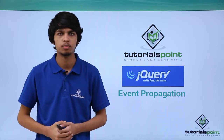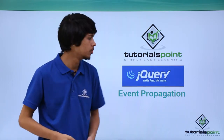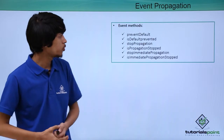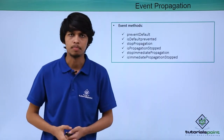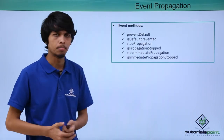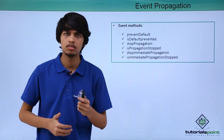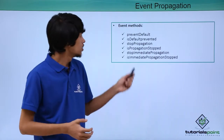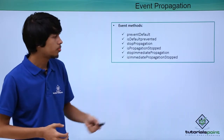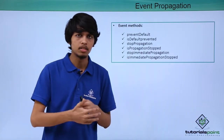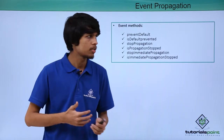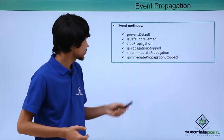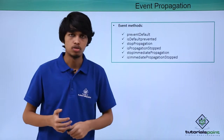Hello and welcome to Tutorials Point. In this session we will be learning about event propagation. jQuery provides several event methods. The first one is preventDefault — the preventDefault method is used to prevent the browser's default action. The second is isDefaultPrevented — the isDefaultPrevented method can be used to check if the preventDefault method was fired or not.